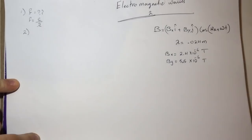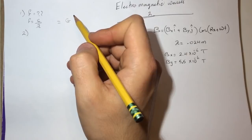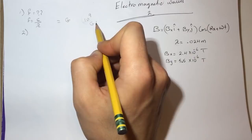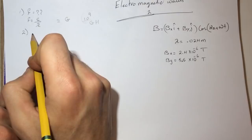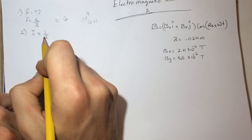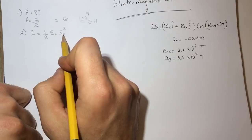By the way, this question is in Giga, so whatever number you get that is to the power of 9, just take that off and put Giga — so the answer will be in gigahertz. Question number two is asking what is I, the intensity of this wave.